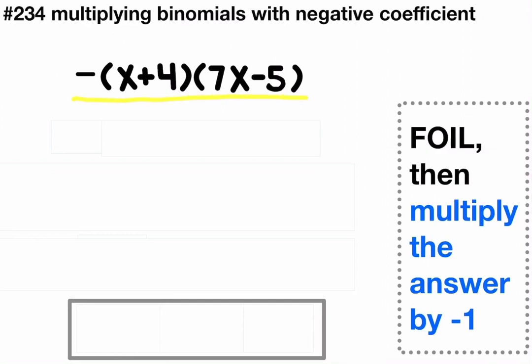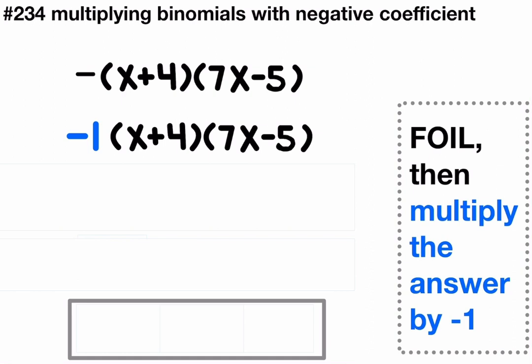To multiply, we want to first remember that this negative out front is a negative 1. Now let's FOIL the x plus 4 times 7x minus 5.